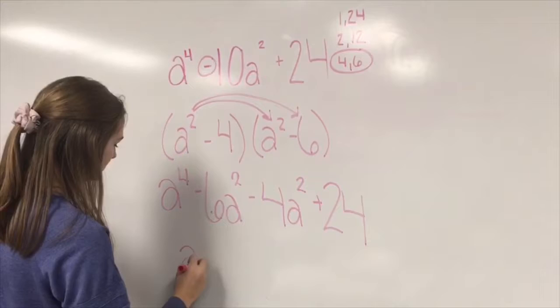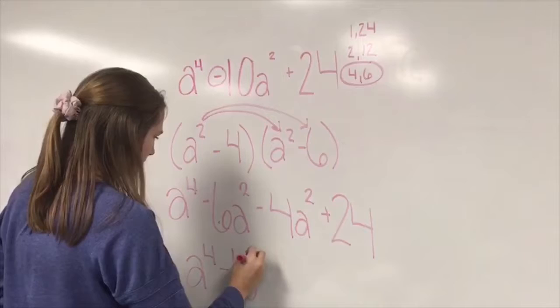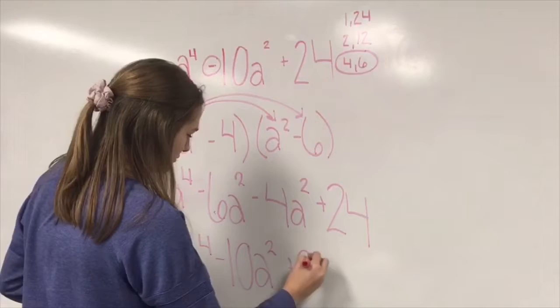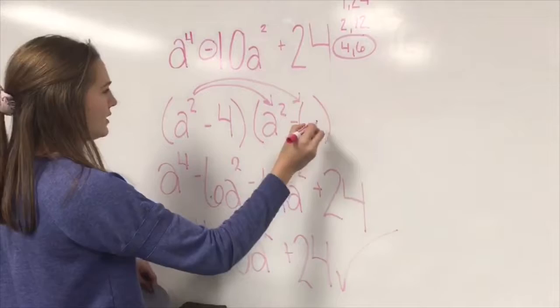Now I have to add up the negative 6 a squared and the negative 4 a squared, and I get negative 10 a squared. So, I checked my answer, it's right, and now I'm done.